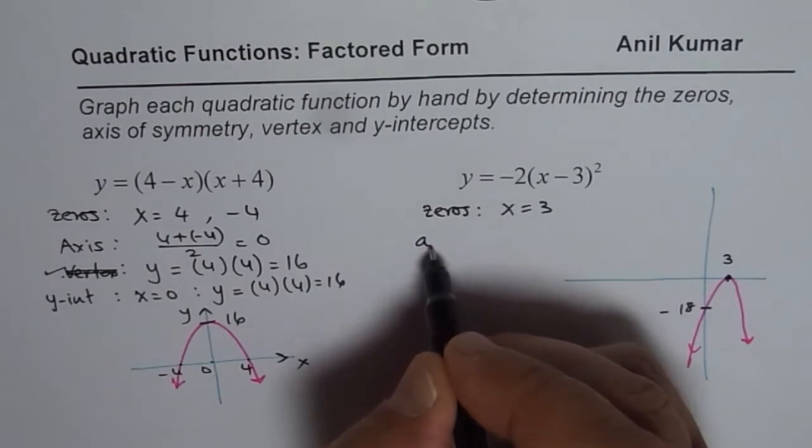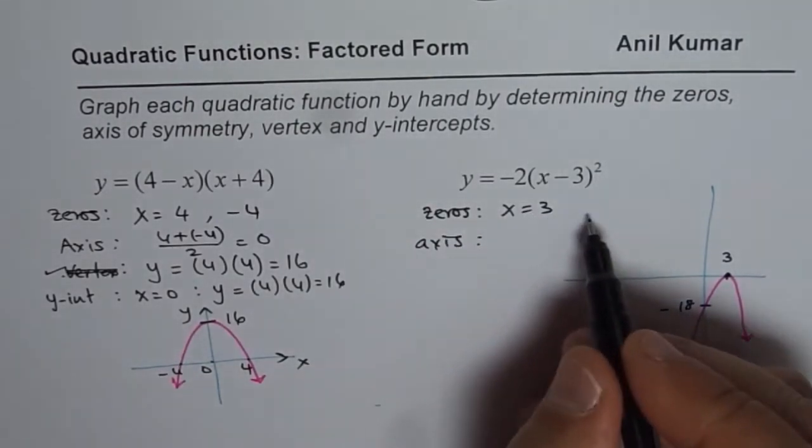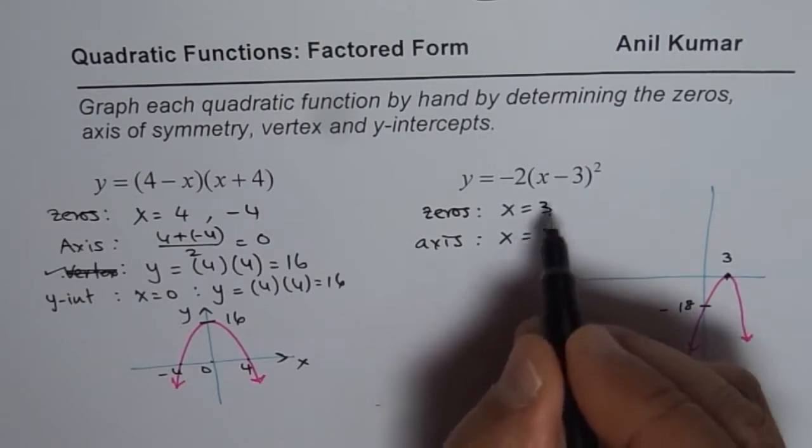Now the axis of symmetry, since there is only one 0, you will add 3 to itself, divide by 2. So x is also at x equals 3.